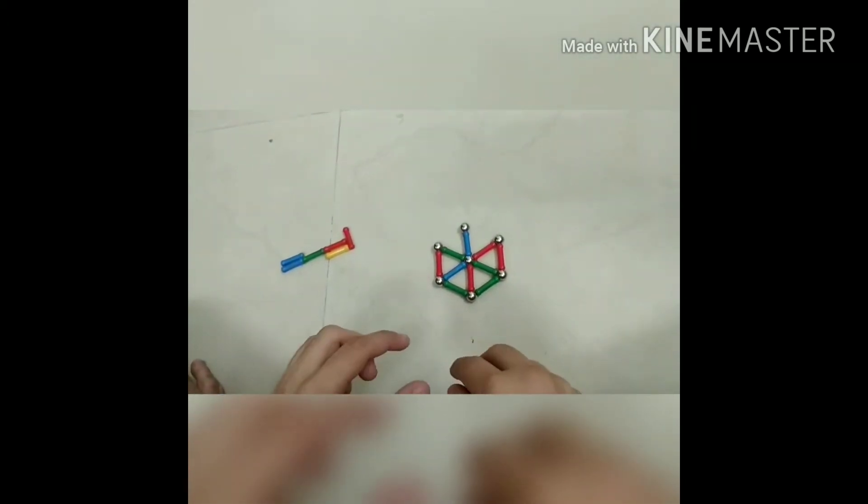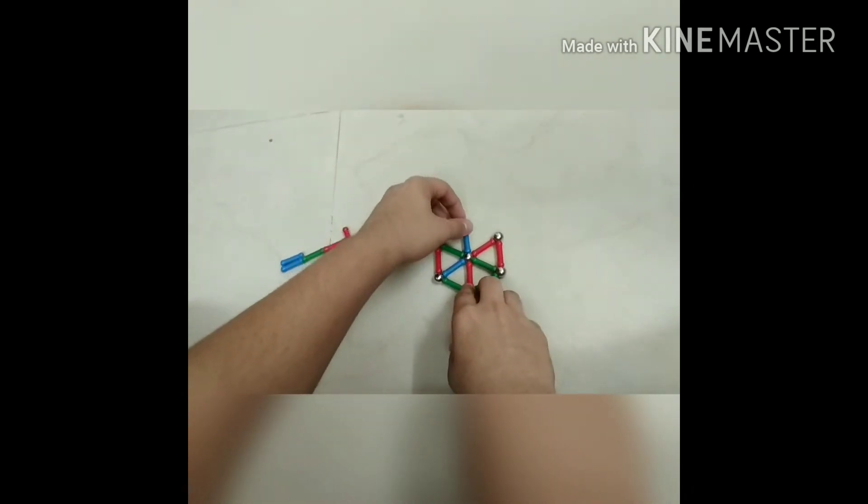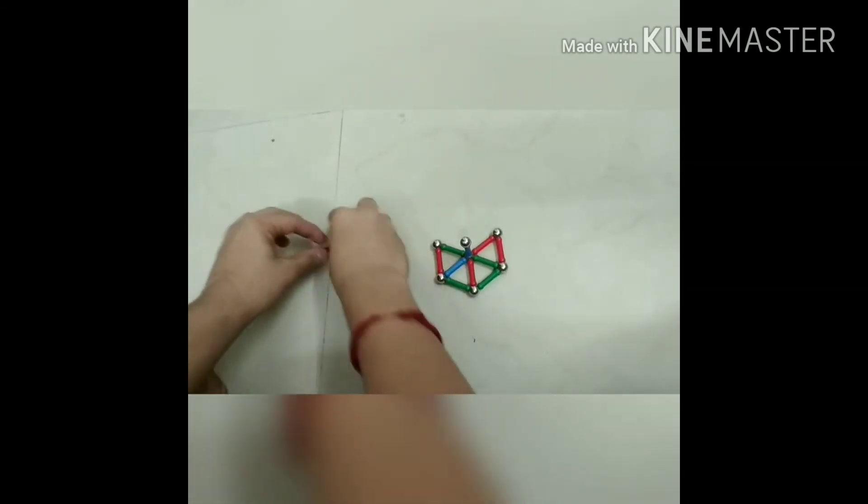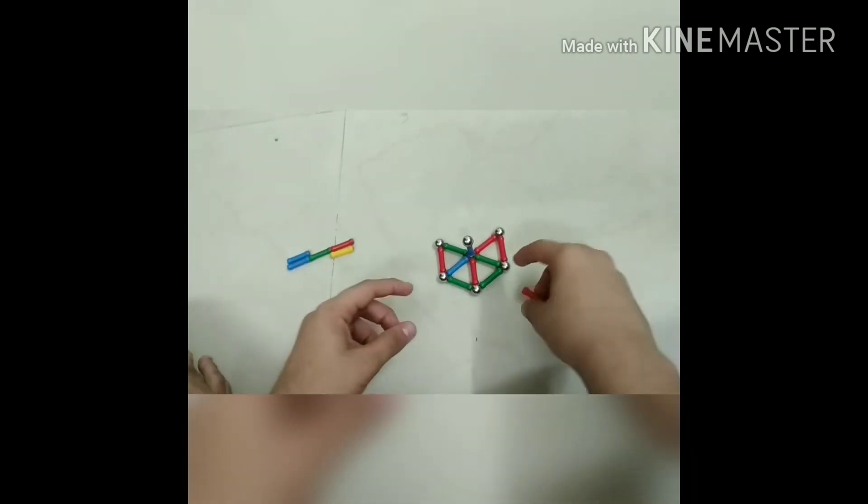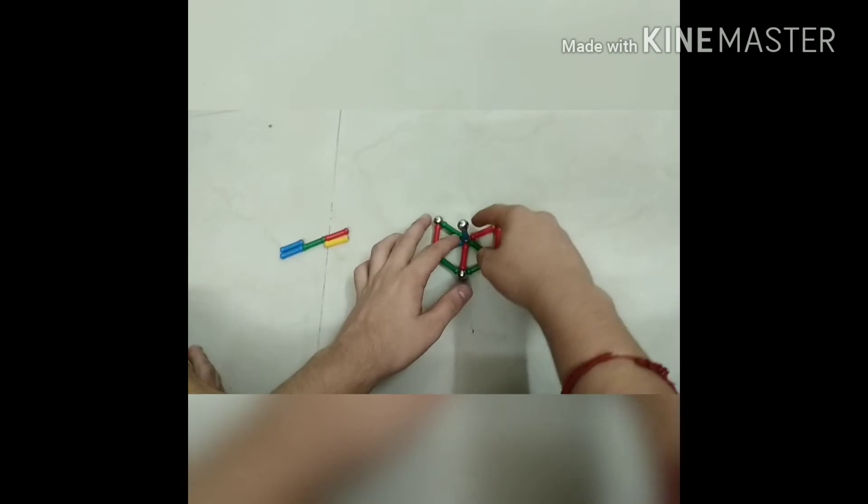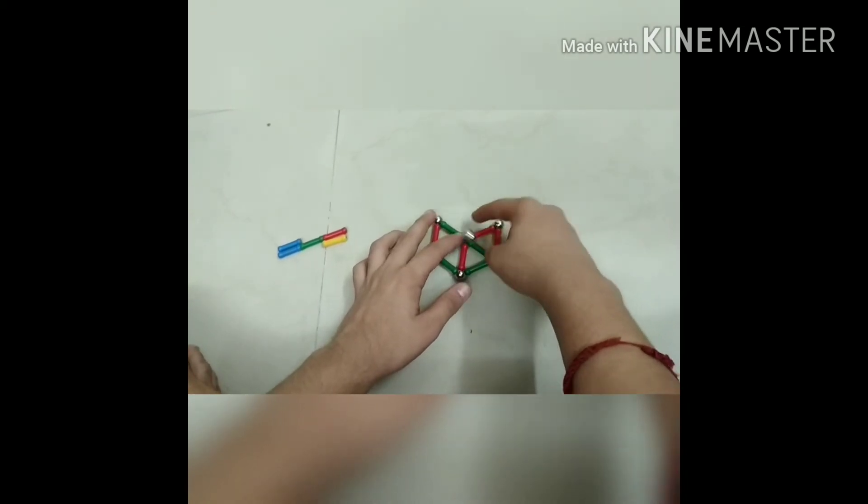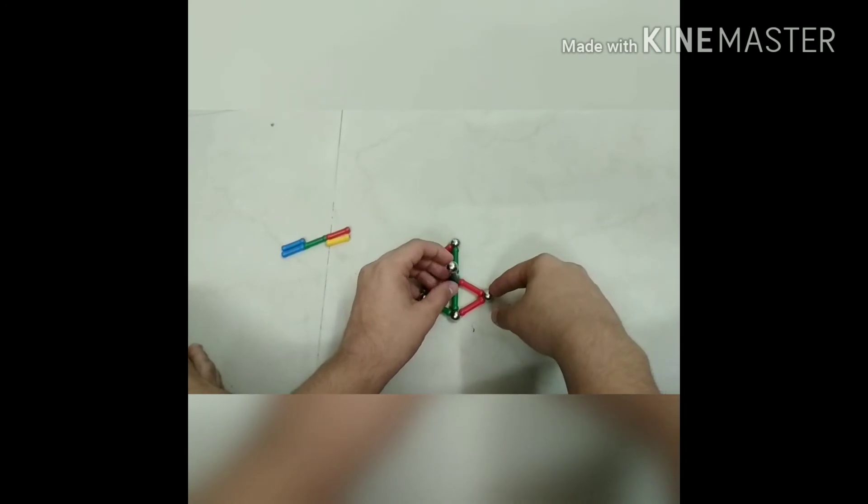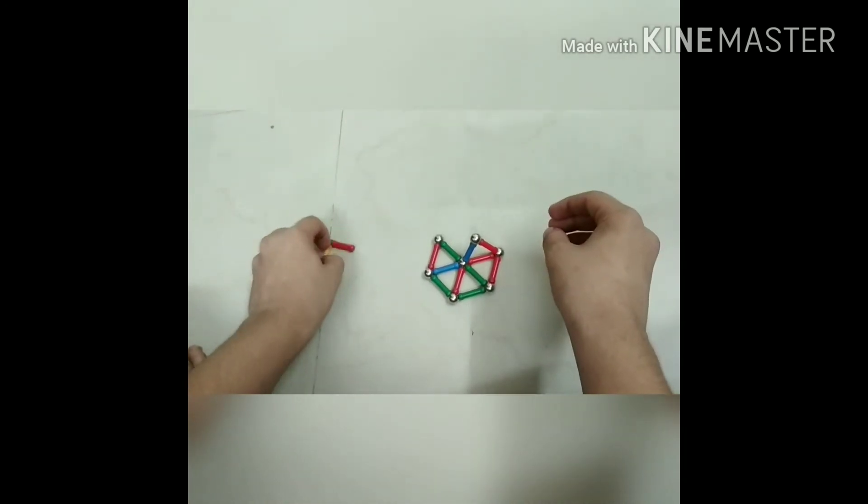Now here comes a tricky part. First of all we will have to lift the topmost magnetic stick and ball, and then we will be making triangles between these 3 magnetic balls: the one on bottom, the one on top, and the one on the side here. Here is the first one.